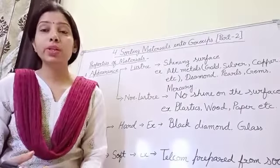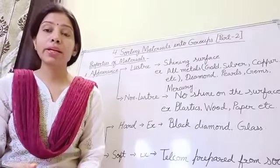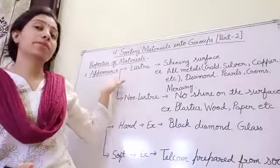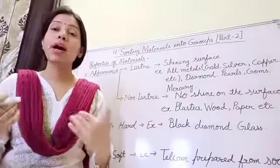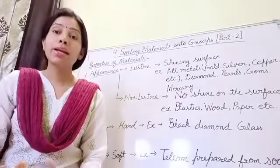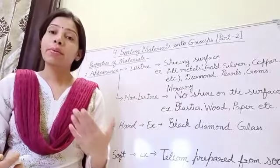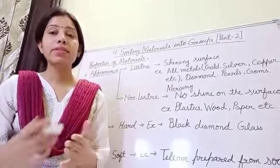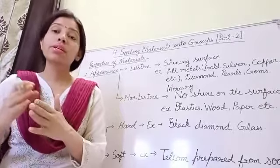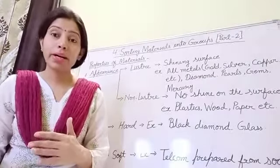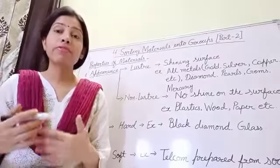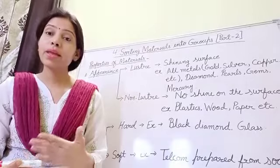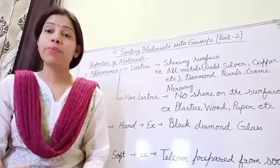In this video we are going to discuss the properties of material. The first property is appearance — appearance means how they look. Materials usually look different from each other; for example, plastic is different from wood, and wood is different from mud. However, there are a few similarities between iron, copper, and aluminum.